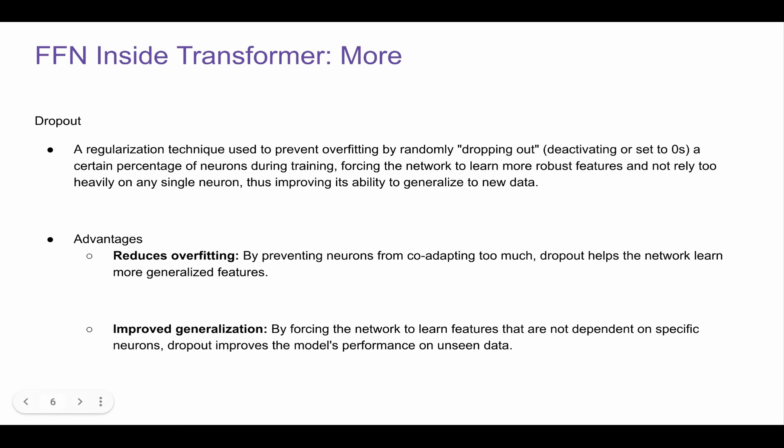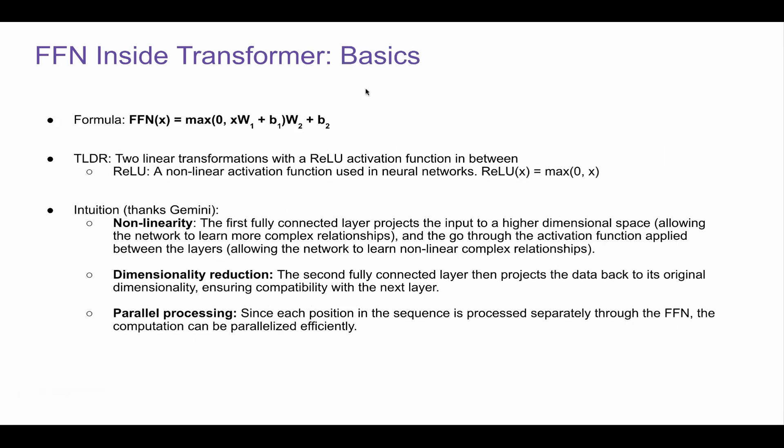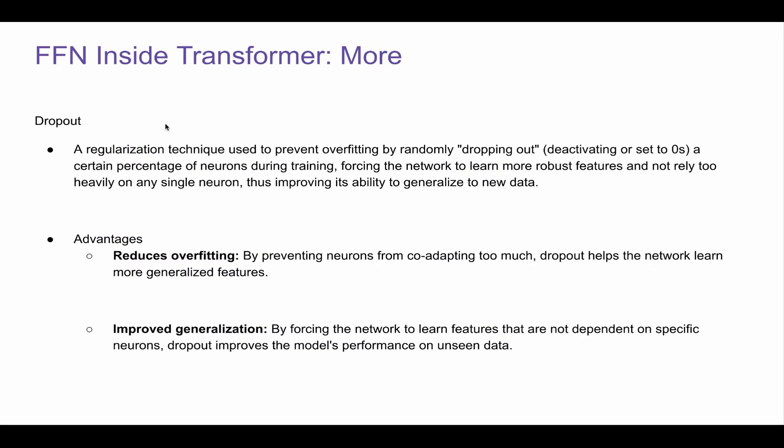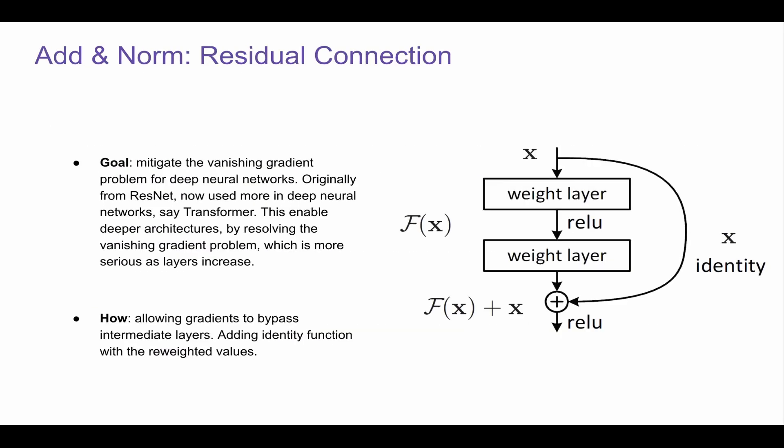So after it goes through this, we usually have dropout. And then there comes the add-and-norm. This is not in the blue block, but this follows the blue block. Add-and-norm means the first one is add, it means residual connection. This is also a common practice in deep learning.